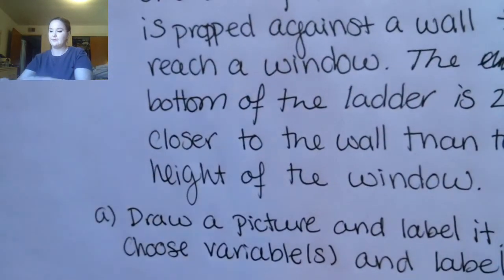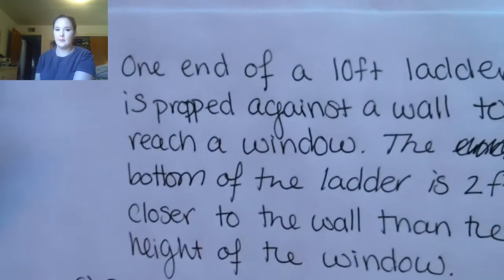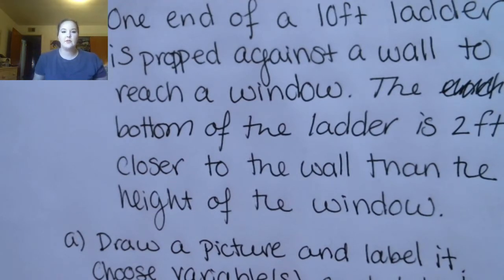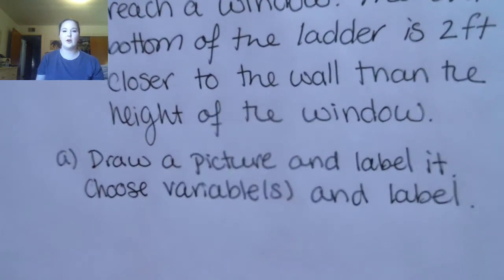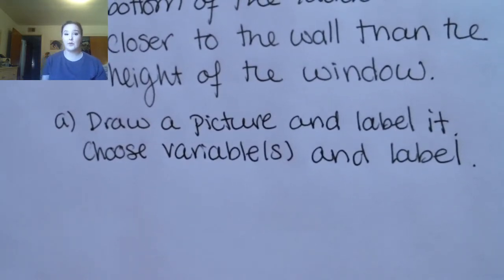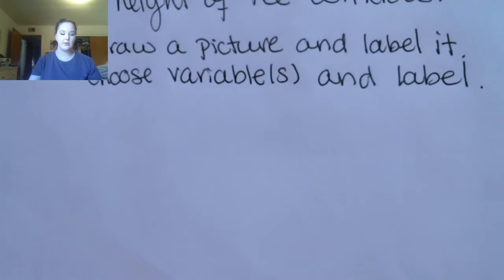Let's look at some word problems. Example three: one end of a 10-foot ladder is propped against a wall to reach a window. The bottom of the ladder is two feet closer to the wall than the height of the window. This asks us to draw a picture and label it, and to choose variables. Go ahead and pause the video and draw your own picture.